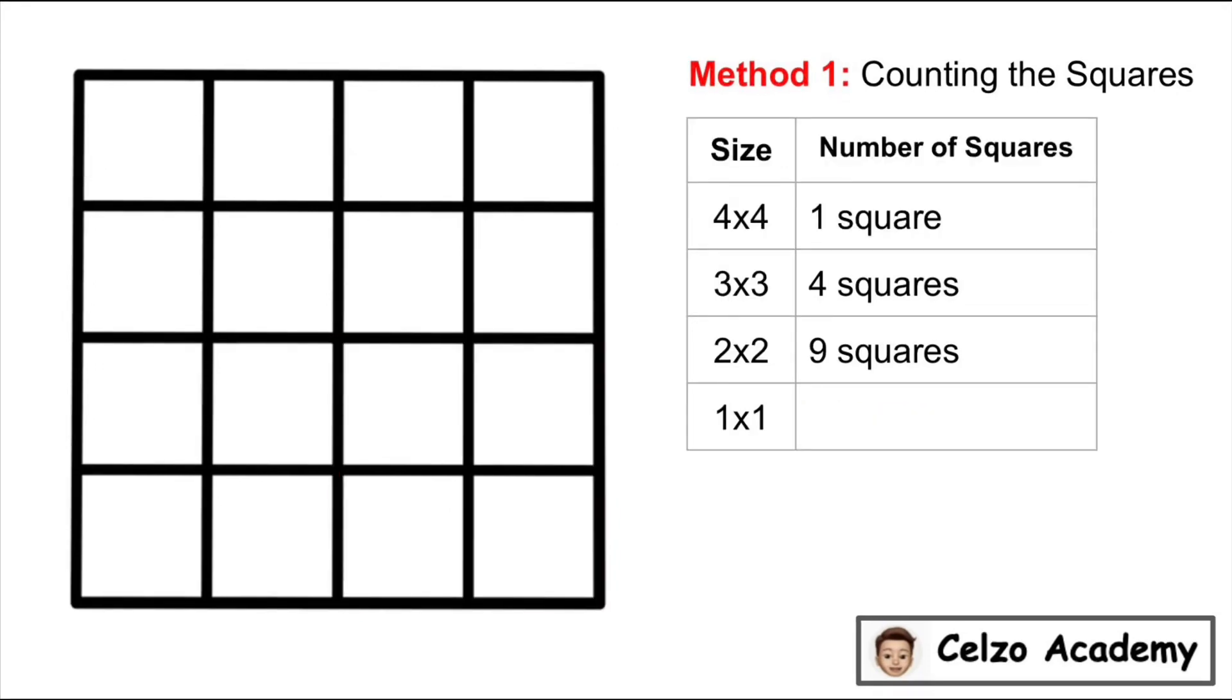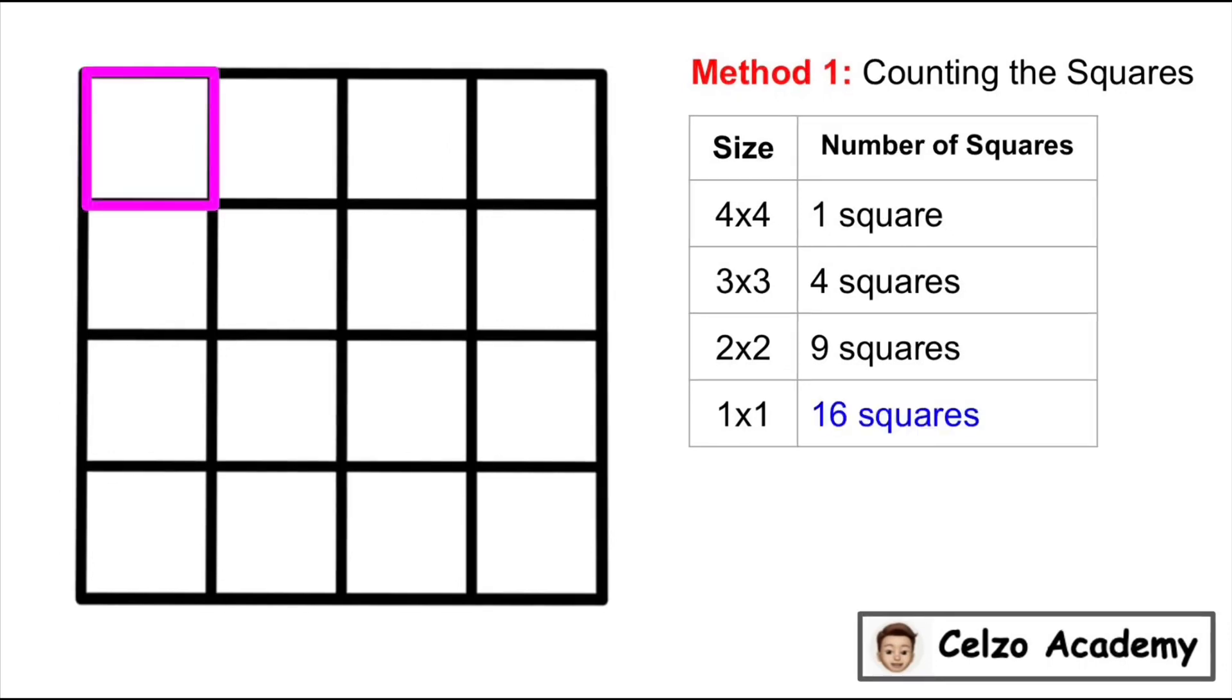And finally, 1x1 squares. Obviously, in this shape, there are 16 squares that are 1x1 in size. So now if we add 1 plus 4 plus 9 plus 16, that is 30 squares total.